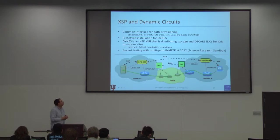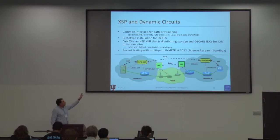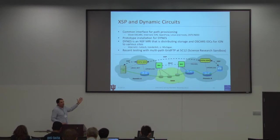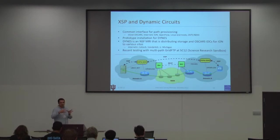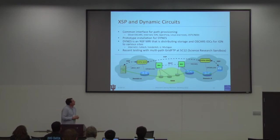DYNES distributes storage and OSCAR IDCs for ION to various sites. We've been actively testing with Caltech, Vanderbilt, and the University of Michigan. In the DYNES environment, you have two DYNES sites — domain A and domain B — with GridFTP running on end-hosts providing substantial storage capacity. GridFTP dynamically signals the XSPD agent, which then provides different backends to configure IDCP communication between OSCAR domains to set up an end-to-end path before the transfer starts. The goal is to make network reservation transparent — instead of users visiting a website to set up reservations, the servers themselves instantiate the network configuration to support particular bulk data flows.